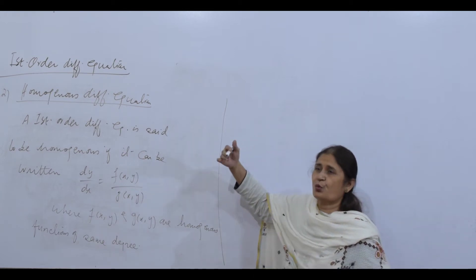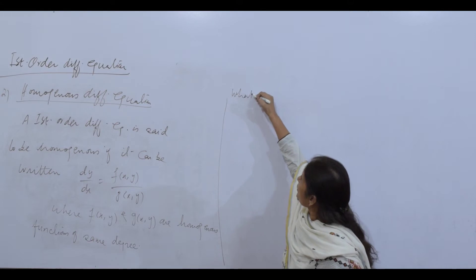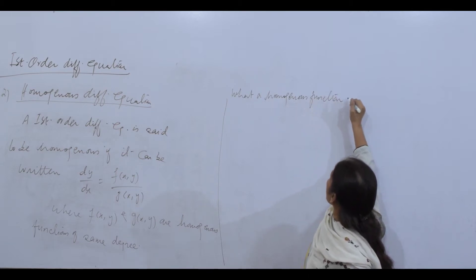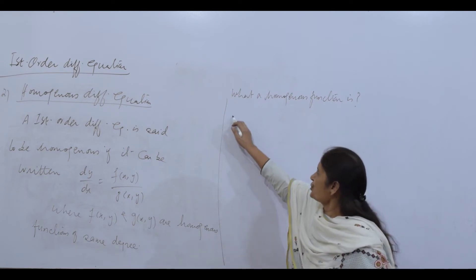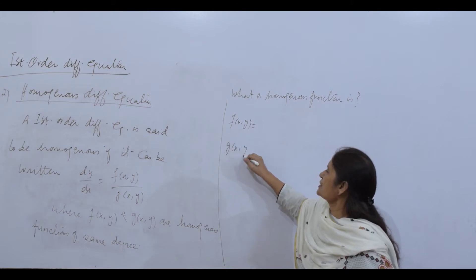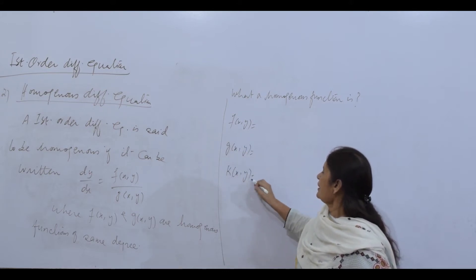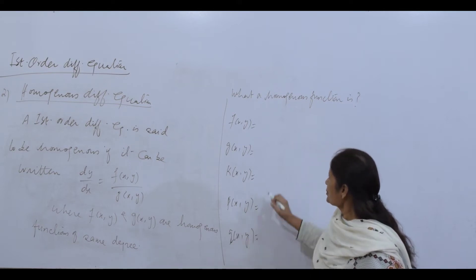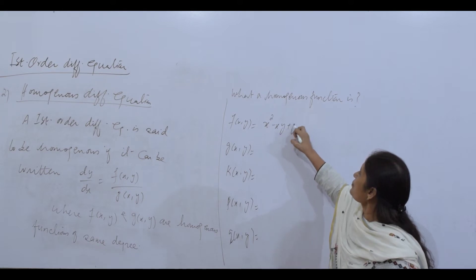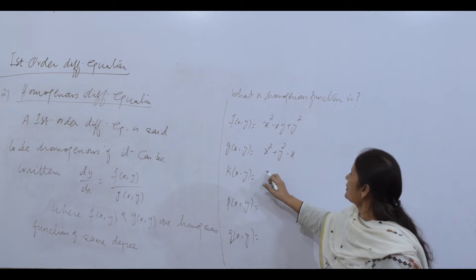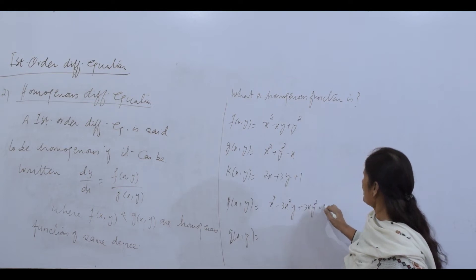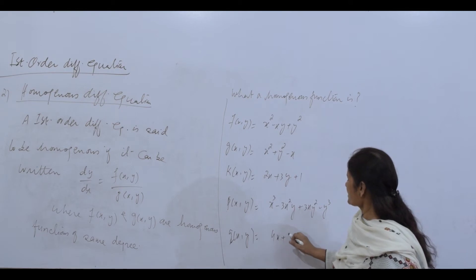First, you should know what a homogeneous function is. Let me write a couple of functions in two variables: p(x,y) = x² − xy + y², q(x,y) = x² + y² − x, then 2x + 3y + 1, then x³ − 3x²y + 3xy² − y³, and 4x + 2y, and so on.